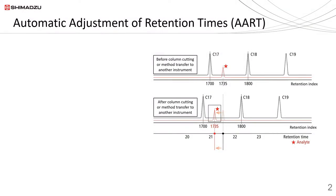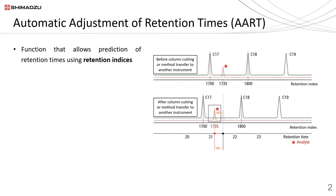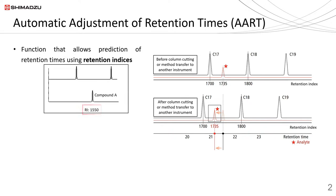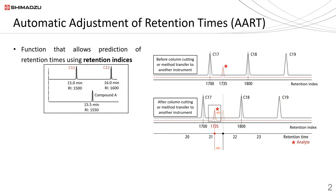The AART function in GCMS Solution allows automatic adjustment of retention times using the retention indices of compounds. Retention index is a value that correlates the retention time of a target compound with the retention time of its adjacent n-alkanes. Each compound is assigned its own specific retention index that is constant and independent of the column length.